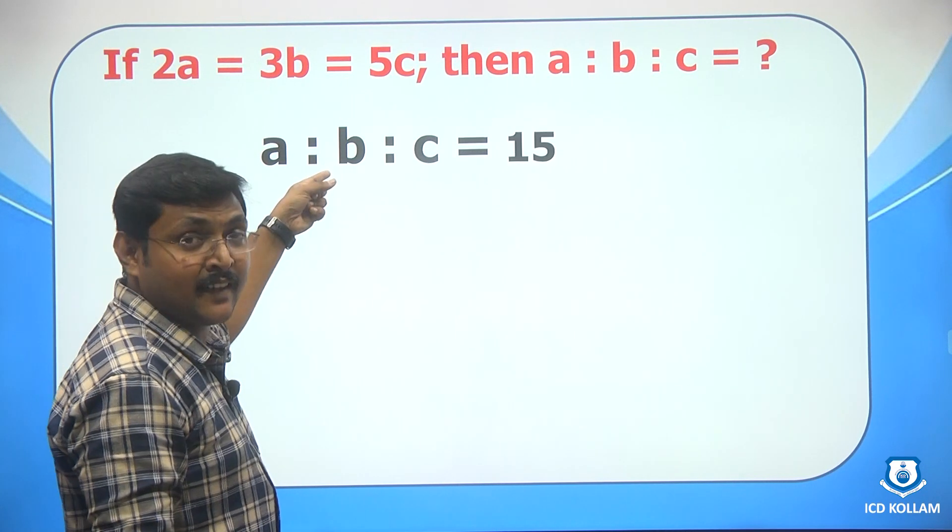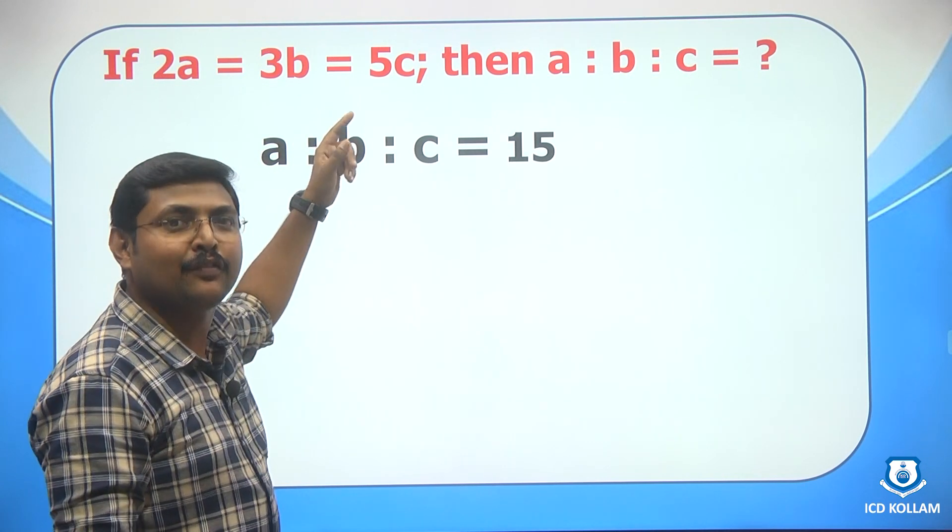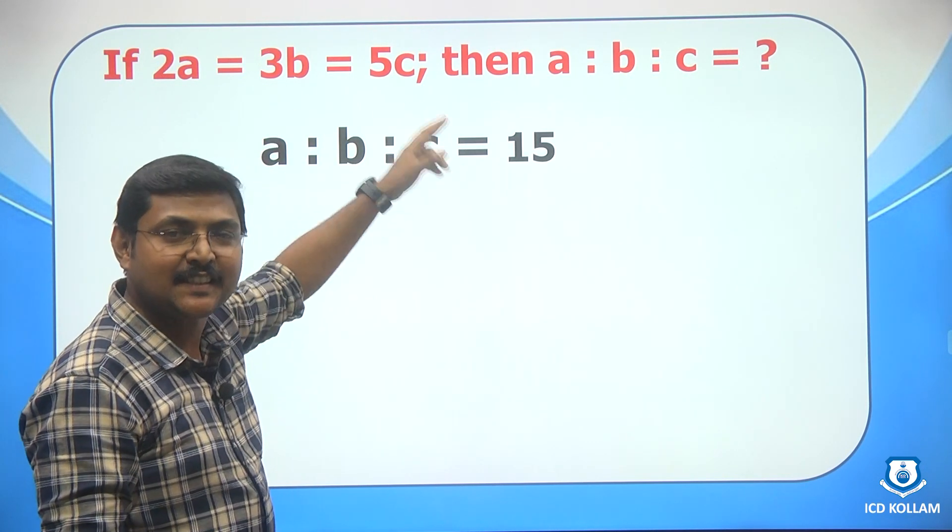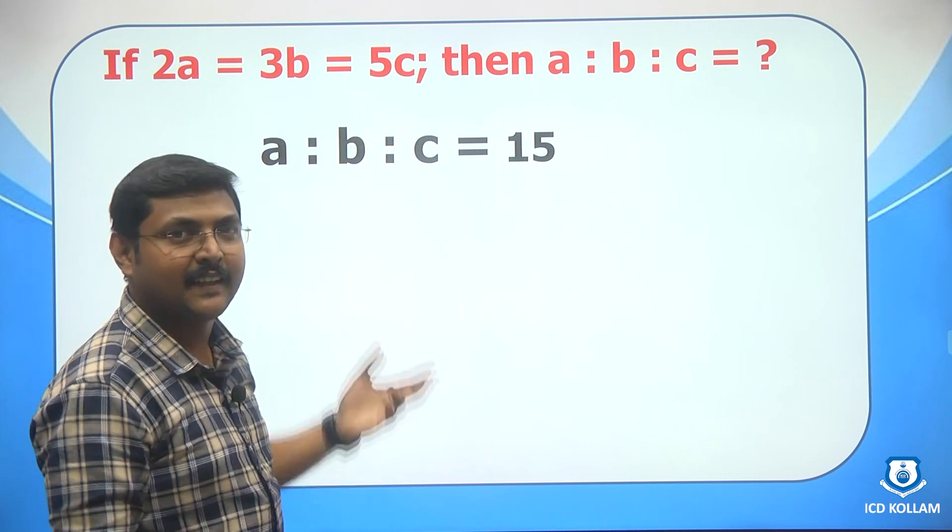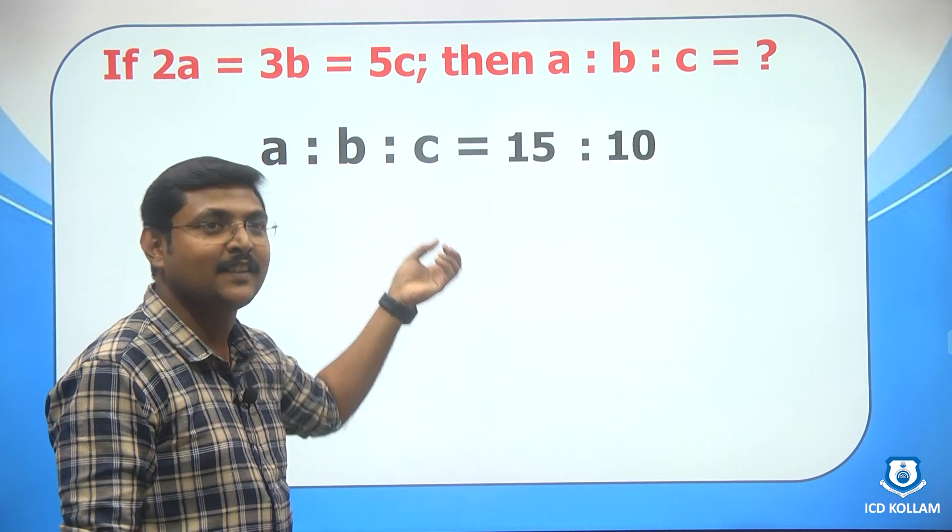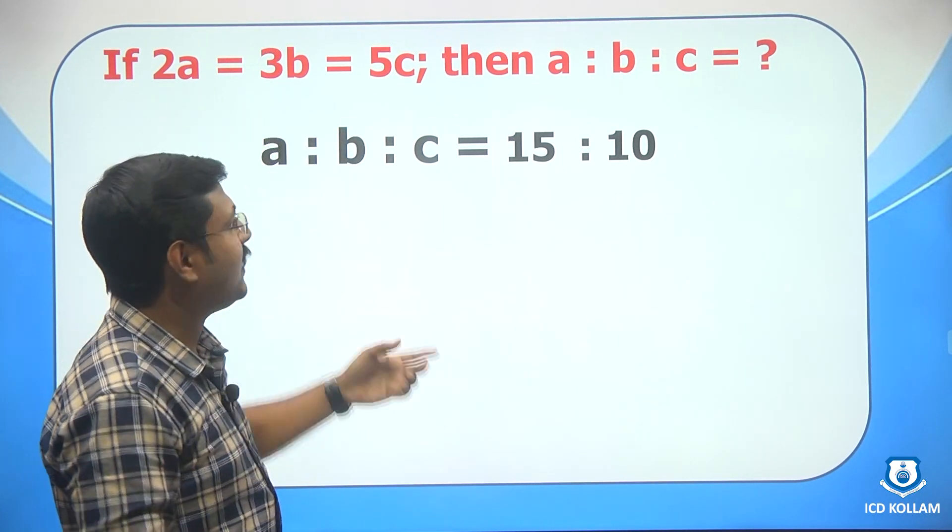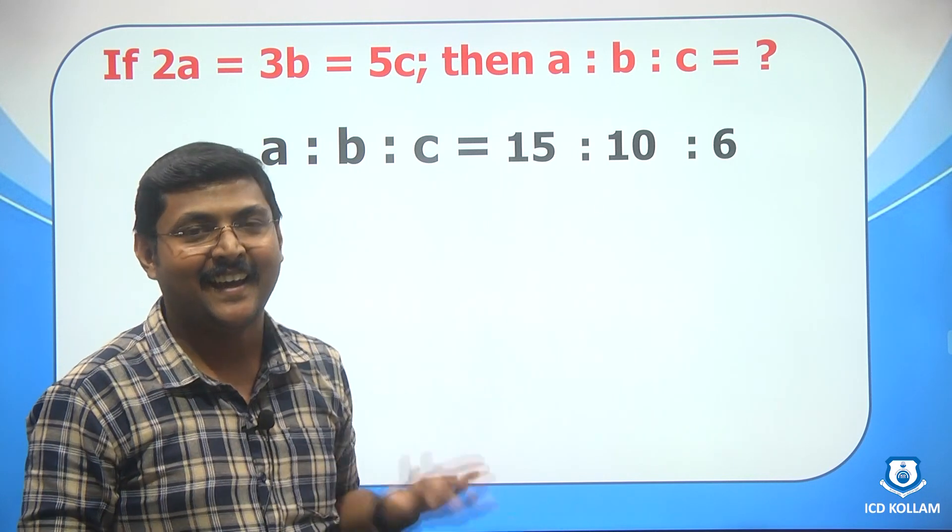Next the coefficient then it is b right. To find b, consider the coefficient of the other two that is a and c. So 2 into 5 that is 10. And the next one we need to find c right. To consider c, yes, we need to consider the coefficient of a and b that is 2 into 3 that is 6. So that is our answer.